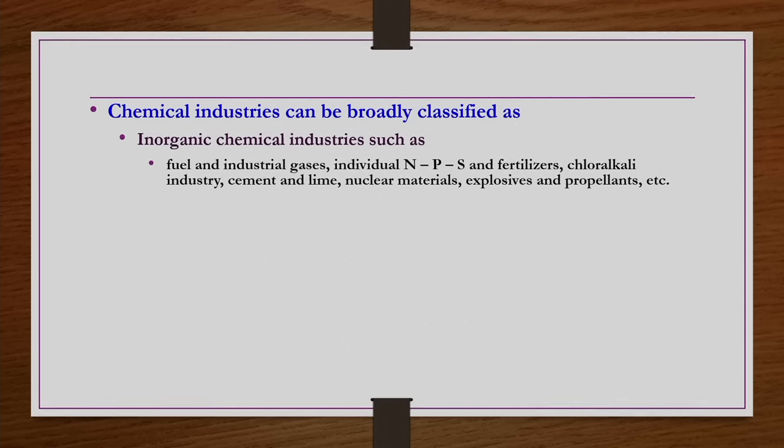The classification of chemical industry is very difficult and it is not possible to define them in one particular way. However, broadly if we classify the chemical industry, we can have five different types. One group is inorganic chemical industries such as fuel and industrial gases, individual nitrogen industries, phosphorus industries, sulphur industries, variety of fertilizer industries, chloralkali industries, cement and lime industries, industries associated with the production of nuclear materials, explosives and propellants, etc.